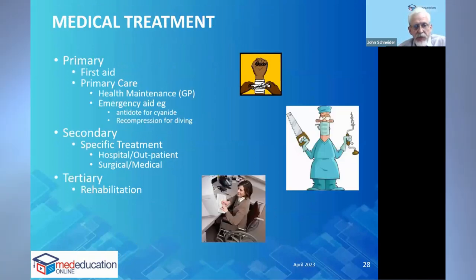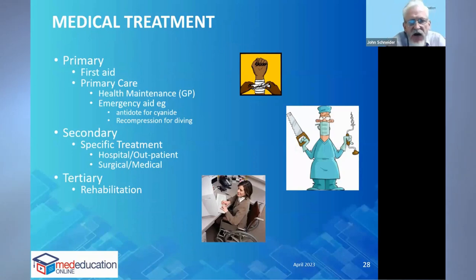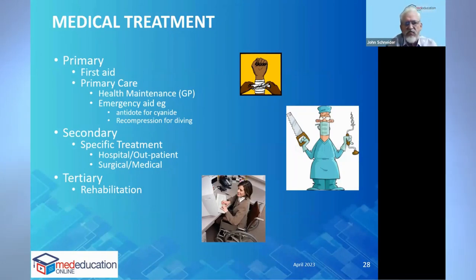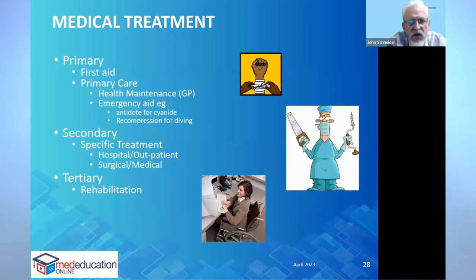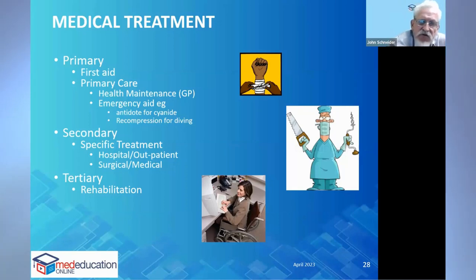Medical treatment itself: primary treatment is usually first aid, and in hazardous situations first aid data is often available on site. Secondary treatment is more specific — admission to hospital, attendance with a medical practitioner, or surgical and medical procedures. The third step is rehabilitation — managing impairments that result in disability — with the view of getting the injured or ill worker back into a productive work situation.